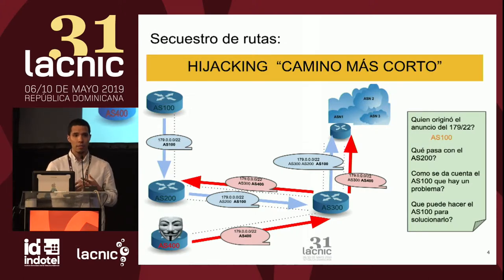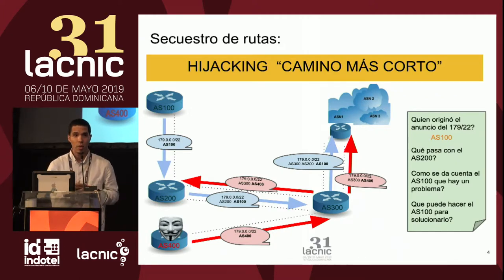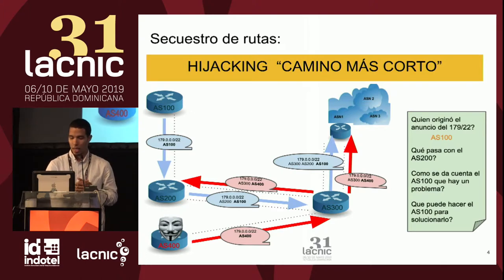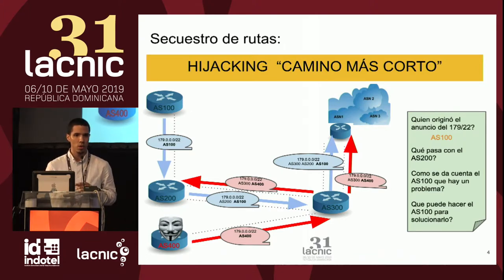¿Qué puede hacer el AS100 para mitigar este secuestro de rutas? Como dije anteriormente, puede buscar información en el WHOIS de esta organización, pero ya vemos algunos inconvenientes. La otra opción más eficaz en este caso es anunciar un bloque más específico: tomar el 179/22, dividirlo en /23 y anunciar un bloque más específico. En este caso retornaría todo el tráfico al AS100 y mitigaría este ataque.